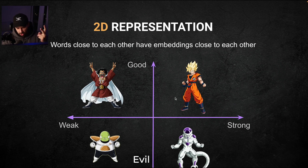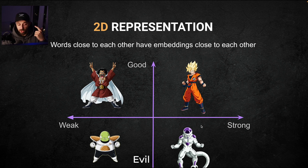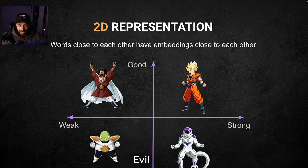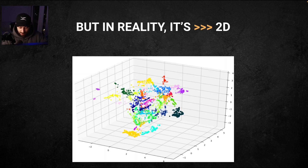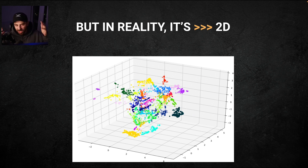In this two-dimensional representation, one dimension vertically is the goodness of a character, and the other dimension horizontally is the strength of the character. So you see that Goku is good and strong, so he's in this quadrant — and depending on his level of strength and goodness he goes further right and further up than another character. Characters that are close to each other will have embeddings that are close to each other. In reality, embeddings have dimensions in the hundreds or thousands — it's a lot more than just 2D, and even this picture is a 3D representation. We cannot picture above 3D in our heads, but that's just to show you those dimensions are a lot bigger.